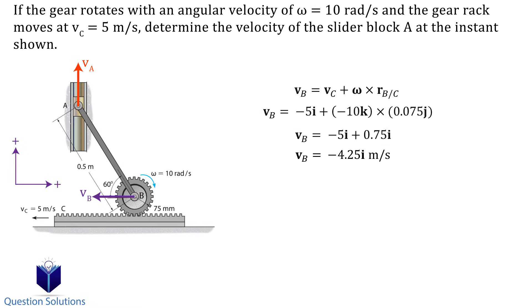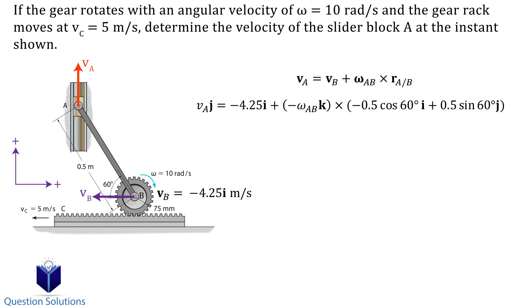Now we can use that to figure out the velocity of slider A by using another relative velocity equation. This time, we're using points A and B. We see that point A will have a velocity upwards, since the slider can only move up or down. We already found velocity B. The angular velocity of rod AB is clockwise, so it will be negative, and the position coordinate can be expressed like this using the 60 degree angle given to us.